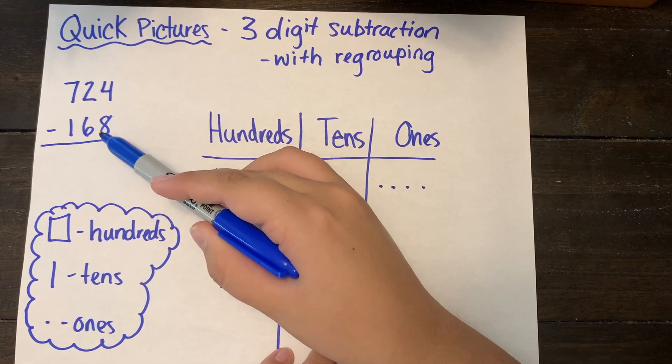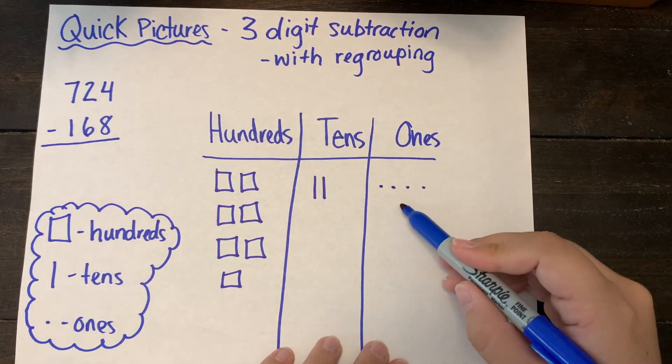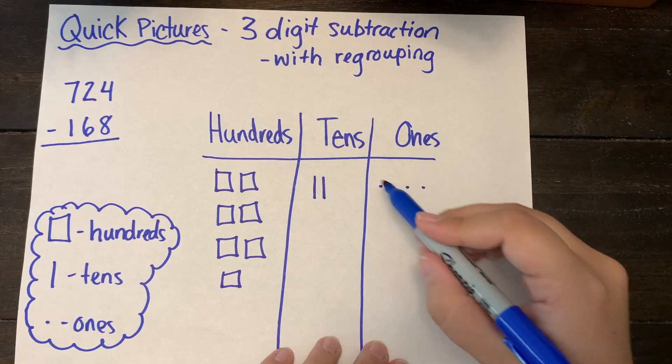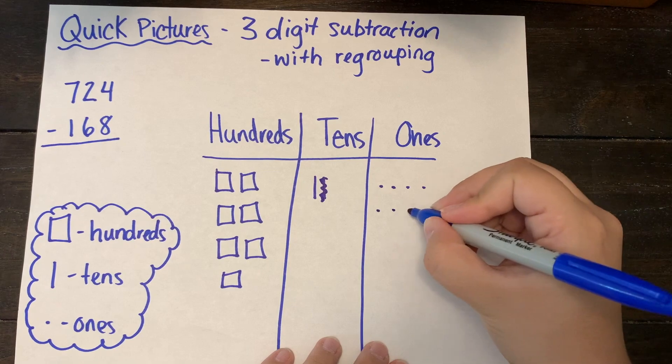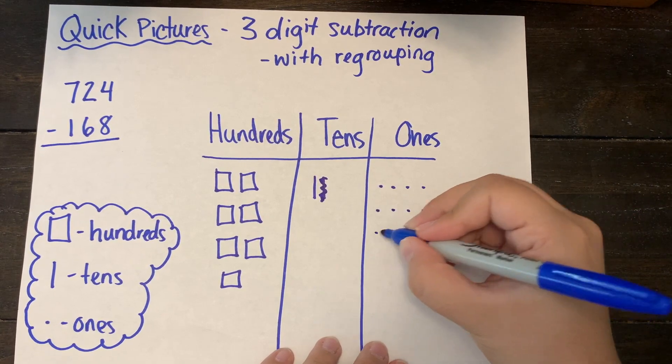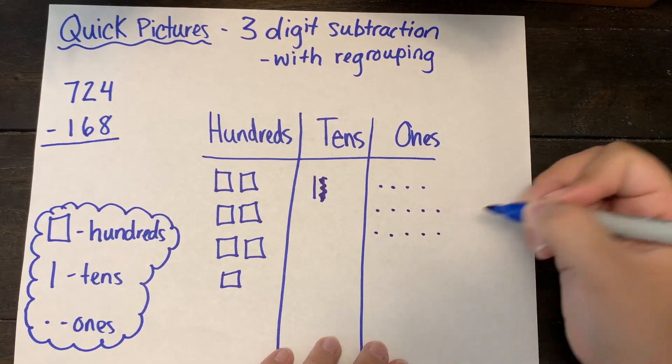Now when I take away I'm going to always start with my ones column first. So I see that I do not have enough ones to take eight away so I'm going to regroup a ten from the tens column as ten ones in the ones column. This will give me enough ones to take eight ones away.